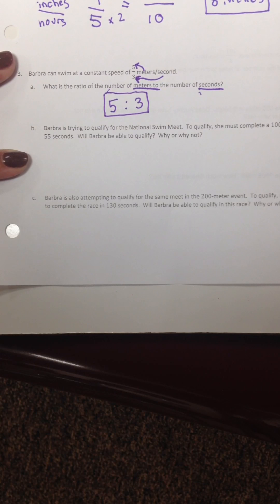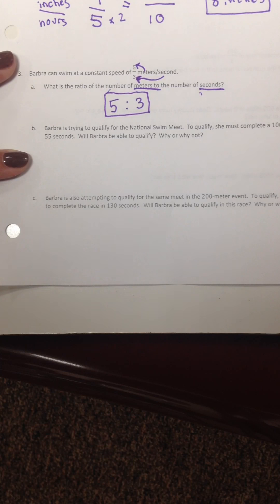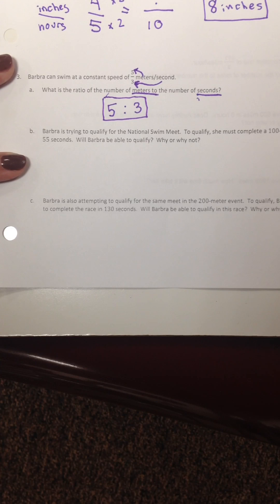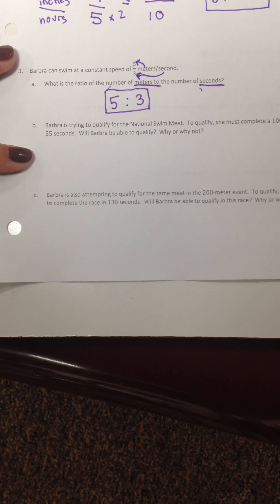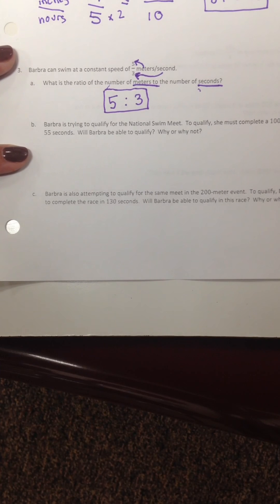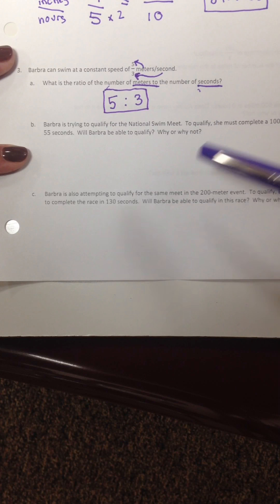Barbara is trying to qualify for the National Swim Meet. To qualify, she must complete 100 meters in 55 seconds. Will Barbara qualify? Why or why not? Well, let's think back to those equivalent ratios. We didn't really do problems like this in class. We did do where we could find how far she's getting in one second.